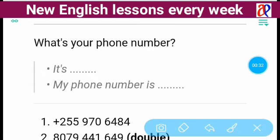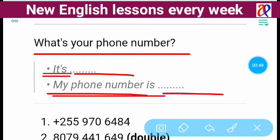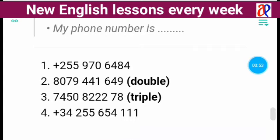If you're the one being asked, you can answer using these two phrases: you can say 'It's' then say your phone number, or 'My phone number is' then say your phone number. So when the question is 'What's your phone number?' you say 'It's...' or 'My phone number is...' followed by the number.